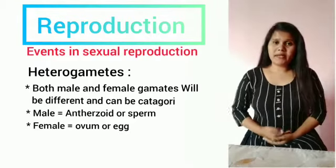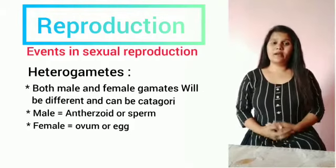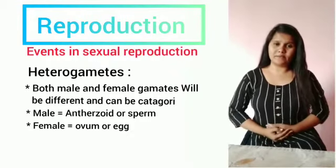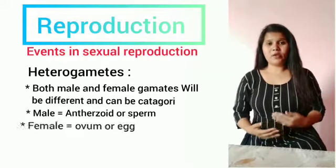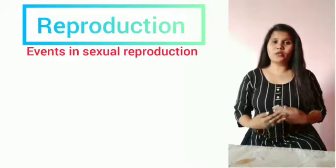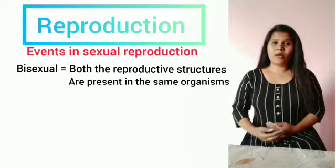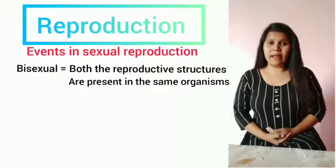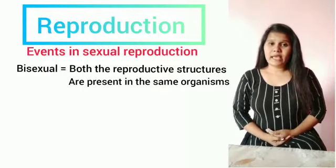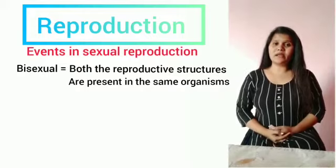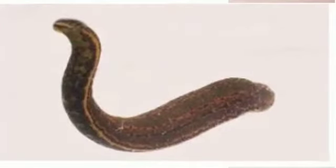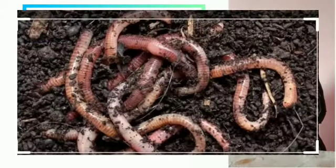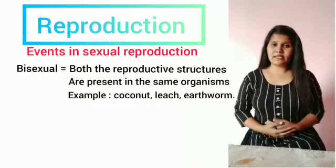Coming to sexuality in organisms, in some cases the plants or animals bearing both reproductive structures in the same plant or body are called bisexual. For example, algae, coconut plant, or cucurbit plant — in these cases both male and female reproductive structures are present in a single plant. So we call them bisexual, or we can also use the word homothallic or monoecious, where both reproductive structures, male and female, are present in a single parent.